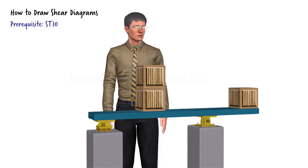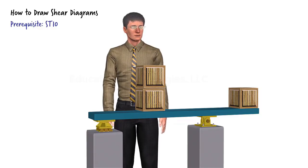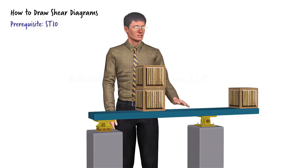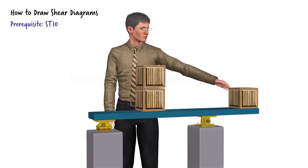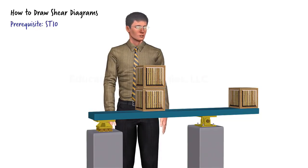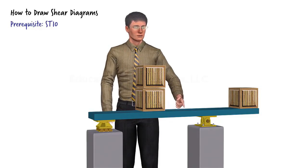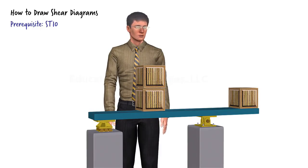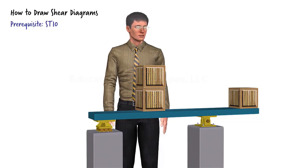This lecture deals with shear diagrams, the graphical representation of the shear force in beams. Consider this simply supported beam subjected to two concentrated loads. These applied forces result in the development of an internal shear force that varies across the length of the beam. A graph that shows how shear varies in the beam is a useful visual design tool for determining the locations at which the force attains its maximum and minimum values.